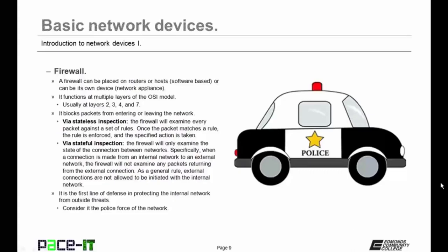The first method is stateless inspection, where the firewall will examine every packet against a set of rules. Once the packet matches a rule, the rule is enforced and the specified action is taken. The other method is stateful inspection, where the firewall will only examine the state of the connection between networks. When a connection is made from an internal network to an external network, the firewall will not examine packets returning from the external connection. As a general rule, external connections are not allowed to be initiated with the internal network.